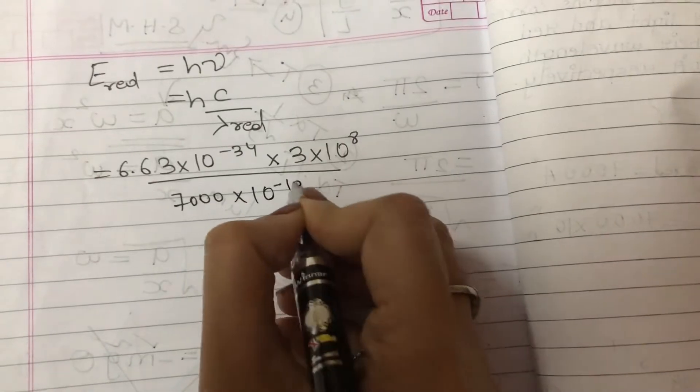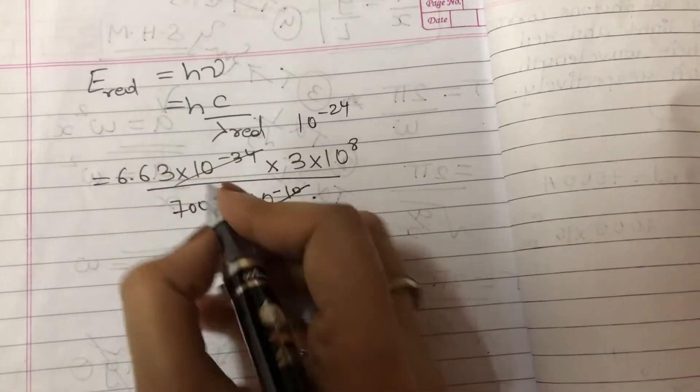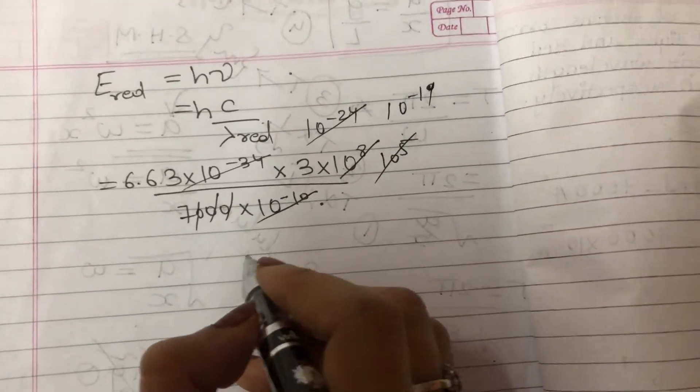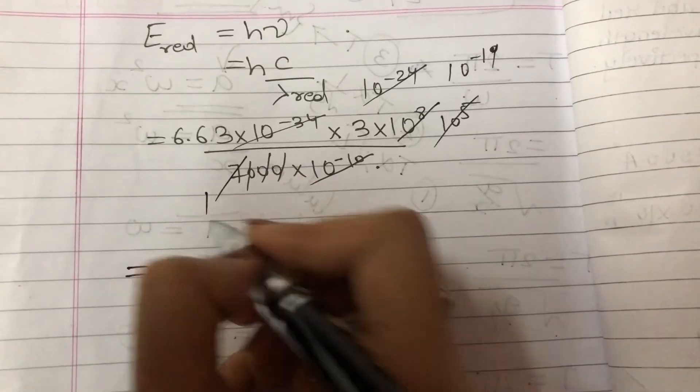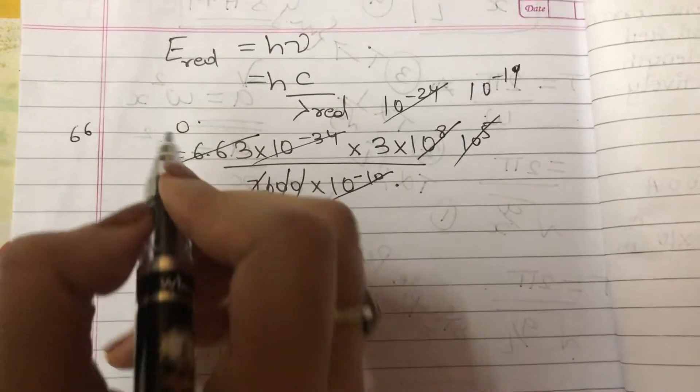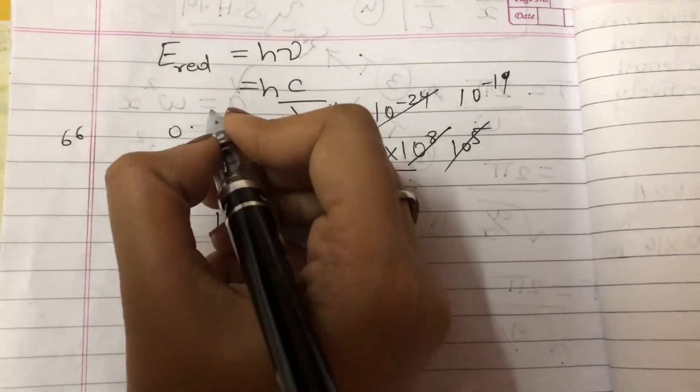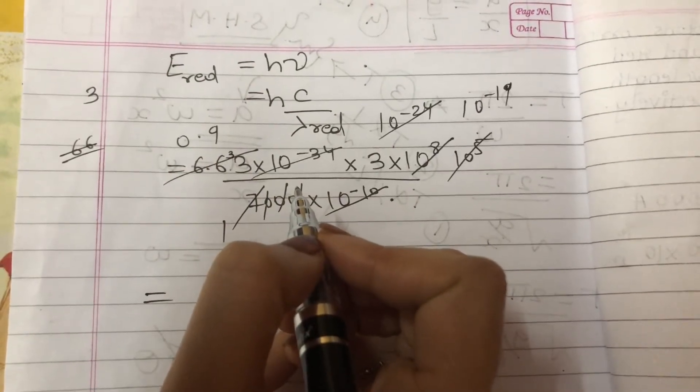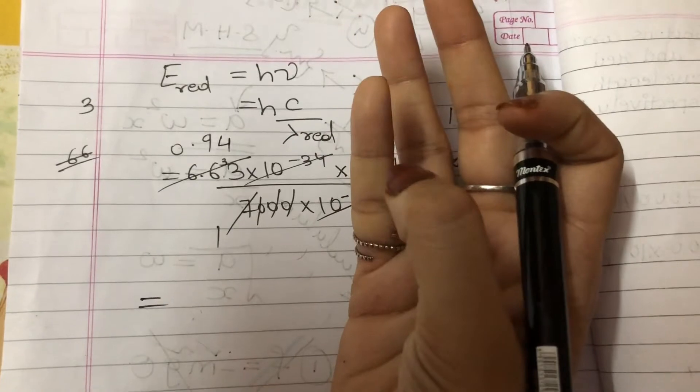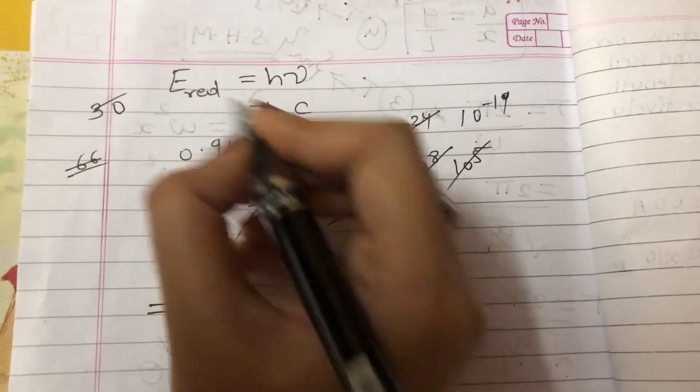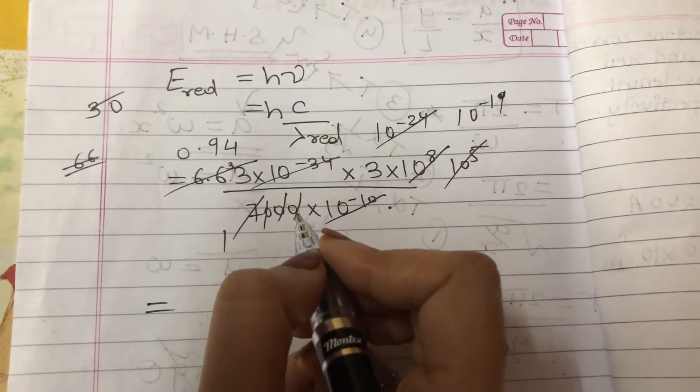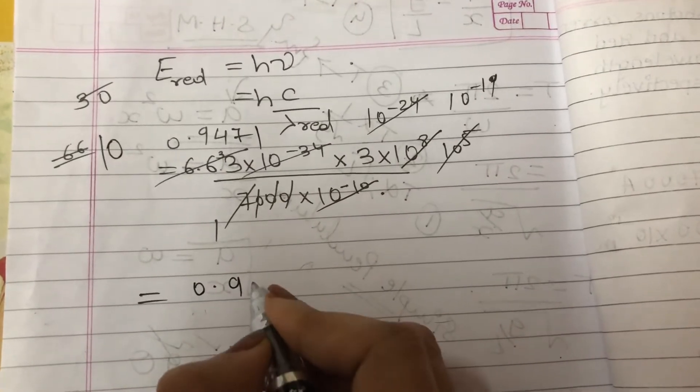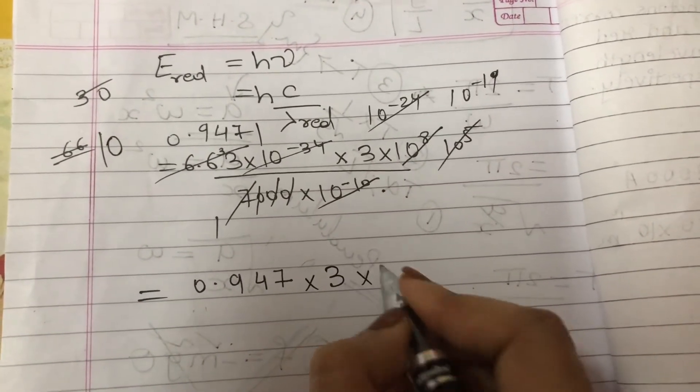This and this gets cancelled. Now it is 10^-24. 3 zeros from here gives 10^5. 10^5 and 10^-24 gives 10^-19. Dividing by 7000: working through the division steps, we get 0.947. So it is 0.947×3×10^-19.